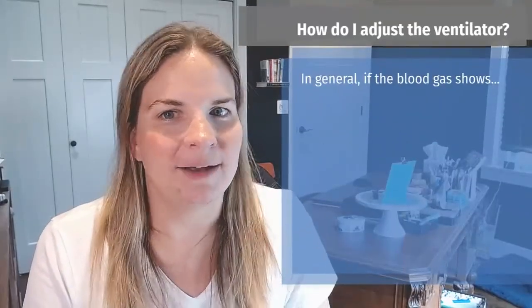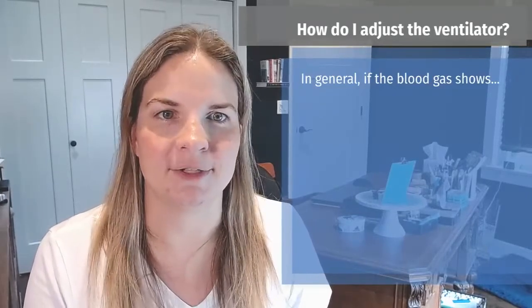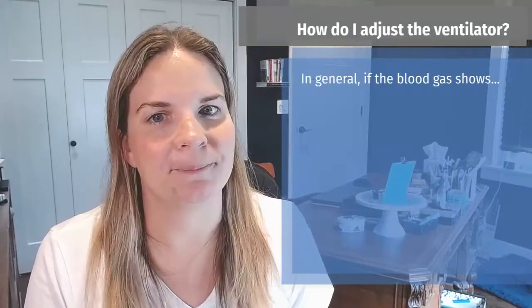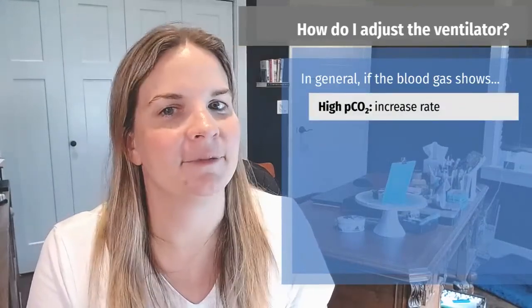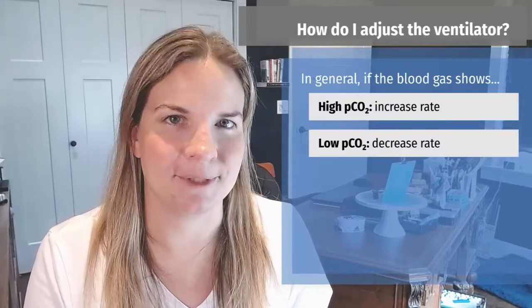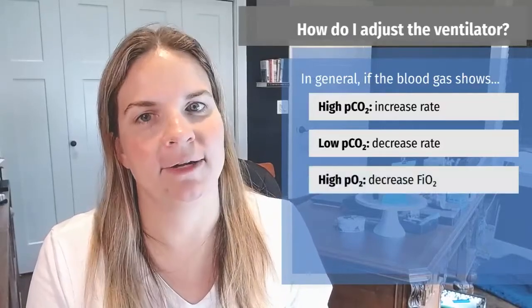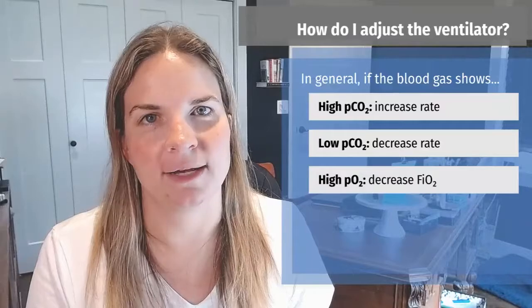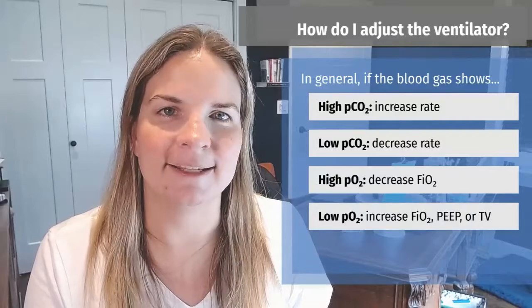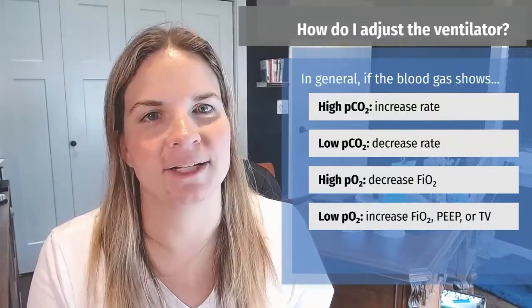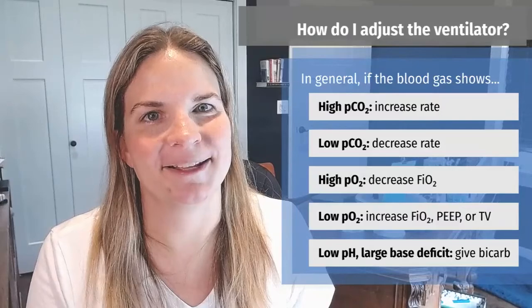Now, how do you adjust settings in response to your patients' blood gases? In general, if the blood gas shows hypercarbia, increase the rate to allow the patient to blow off more CO2. Conversely, if the patient is overventilated, decrease the rate to retain more CO2. If the PO2 is high — say above 80 to 100 — decrease your FiO2. If the PO2 is low, you can increase oxygenation by increasing FiO2, PEEP, or tidal volume depending on the situation. Keep in mind that not all abnormal blood gases indicate a respiratory issue warranting a ventilator change — if your pH is low and there's a large base deficit, give sodium bicarb to address the metabolic acidosis.